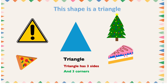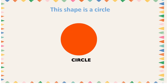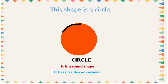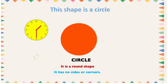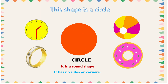A Christmas tree, a piece of cake — all these objects have a triangular shape. This shape is a circle. A circle is a round shape. It has no sides or corners — it's round. We can find it in objects like a wall clock, a ring, a football, and a doughnut.